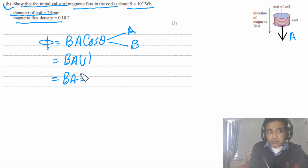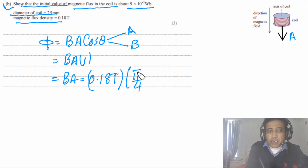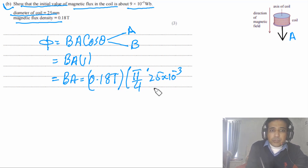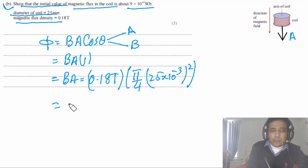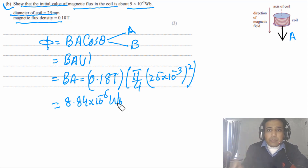Now we plug in values. B = 0.18 T and the diameter is 25 mm, so the cross-sectional area is (π/4)D² = (π/4)(25 × 10⁻³)². Solving this gives φ = 8.84 × 10⁻⁵ webers, which is the initial value of magnetic flux. Quite a straightforward calculation.